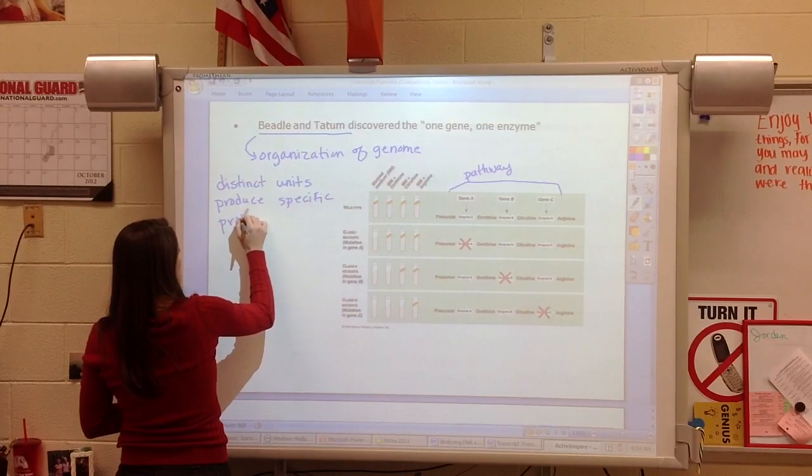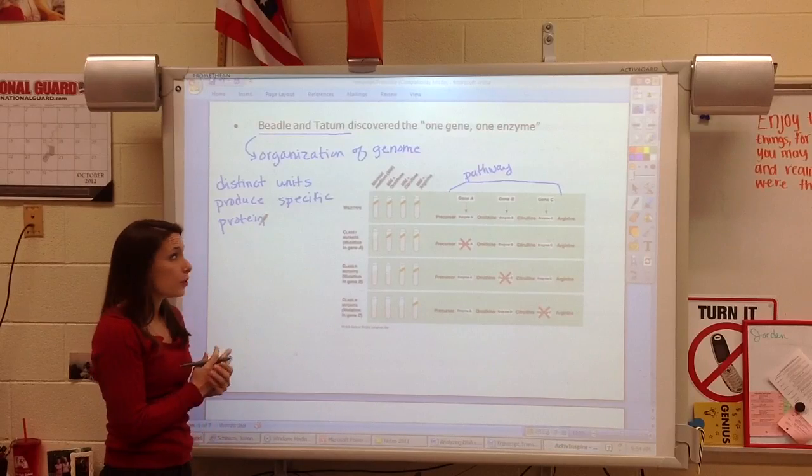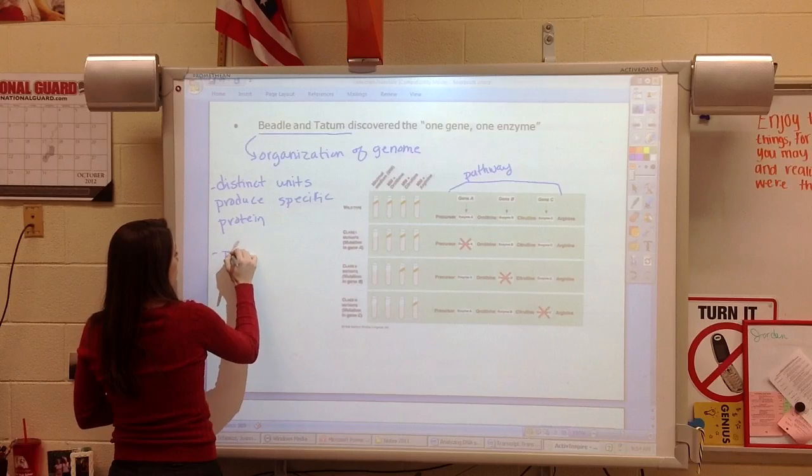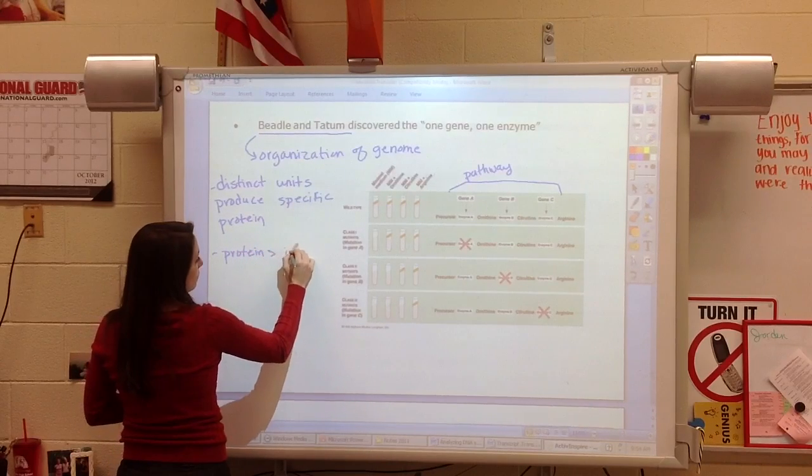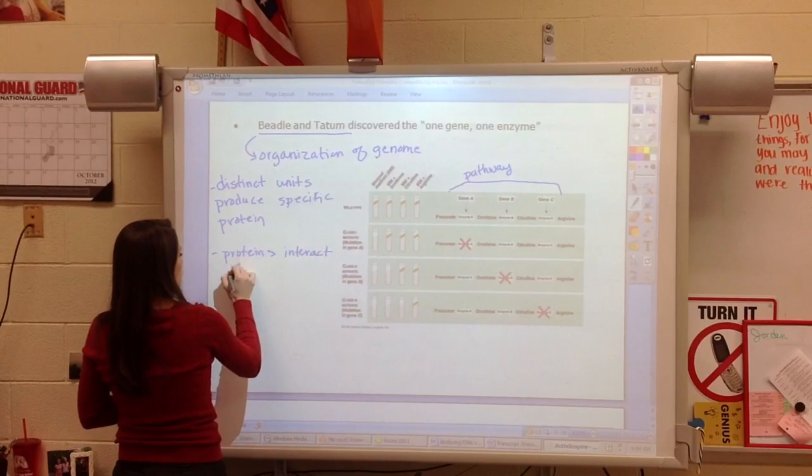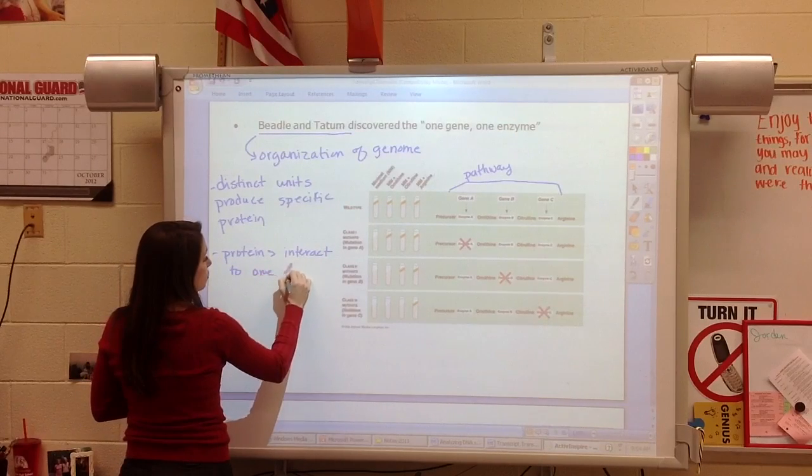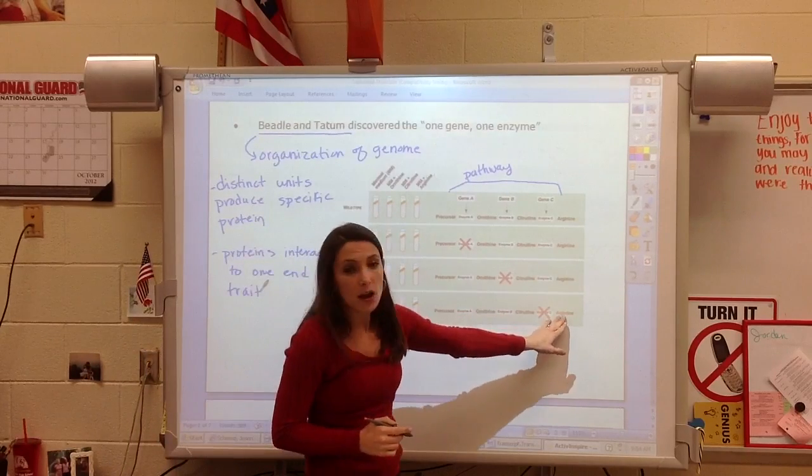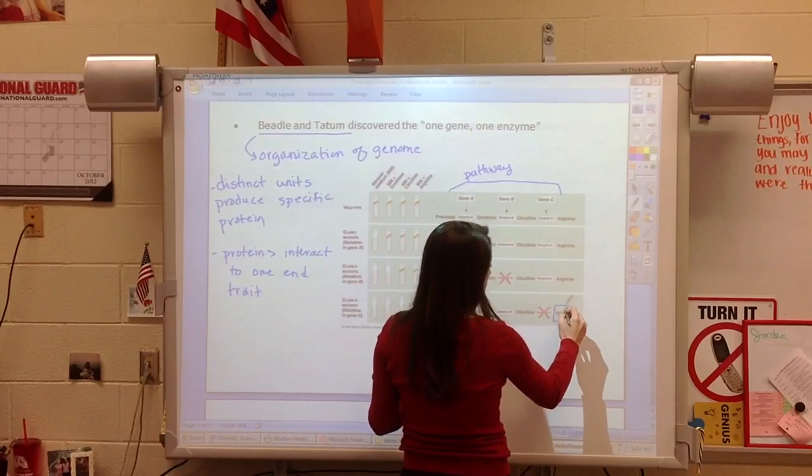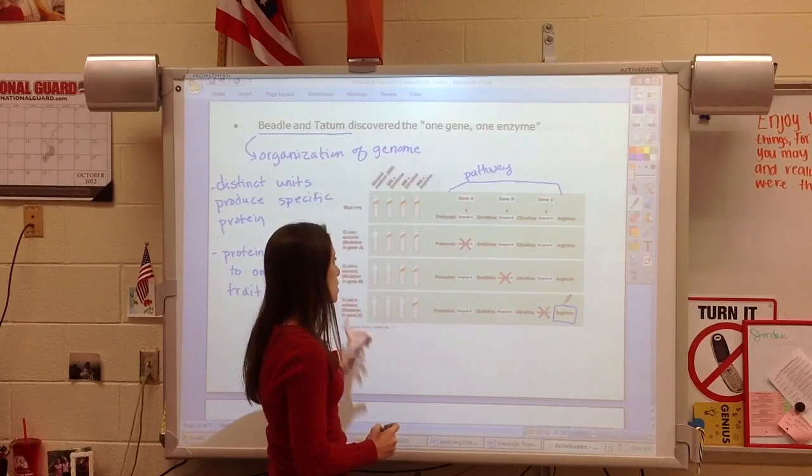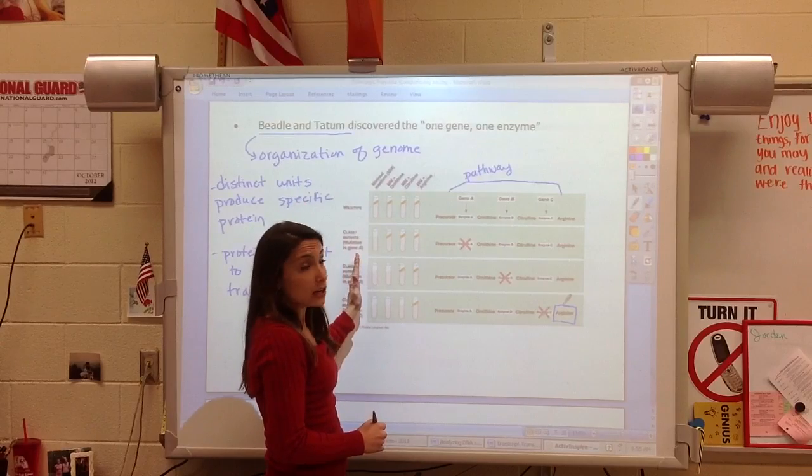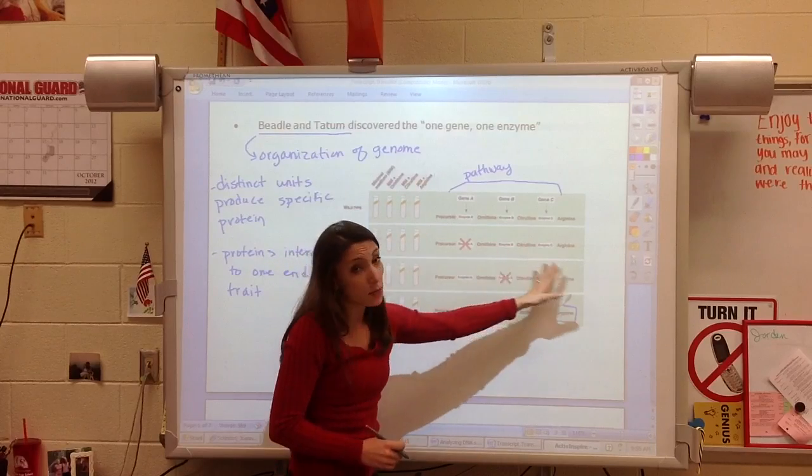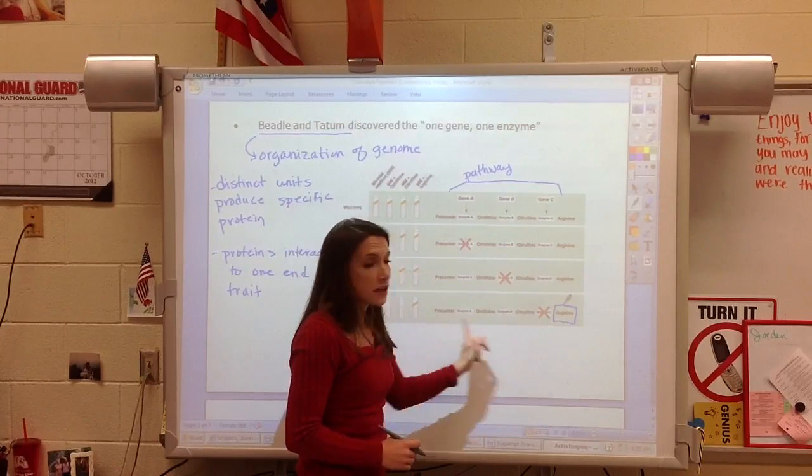They were concentrating on enzymes, but we know that there are other functions of protein. The difficult thing is that there are many times where those proteins interact to have one end trait. So what they were looking at here is how do we make arginine. That was the trait that they were looking at is the ability to make arginine. And what they were able to do was use radiation to damage certain parts of the DNA and prove that this was a pathway and different genes were involved in this pathway.